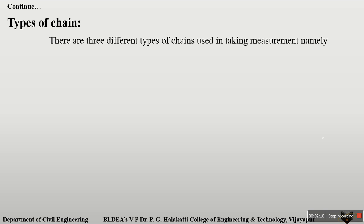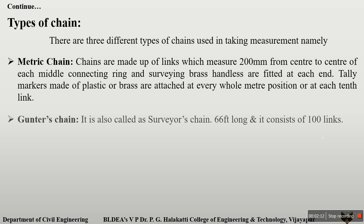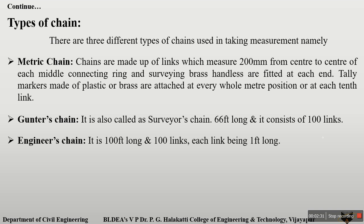In the chain there are different types of chains. First is the metric chain, which is in metric units — one link equals 20 cm. Next is Gunter's chain, also called the surveyor's chain. Its length is 66 feet and it consists of 100 links, so one link equals 66 divided by 100, which gives 0.66 feet.